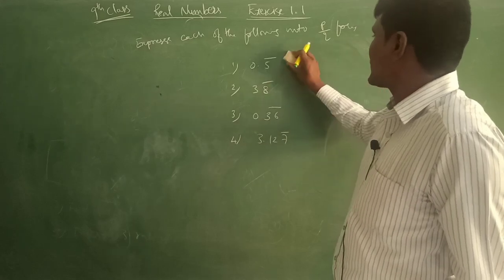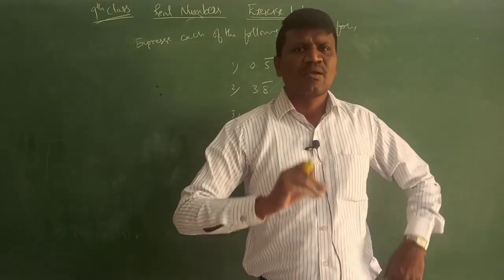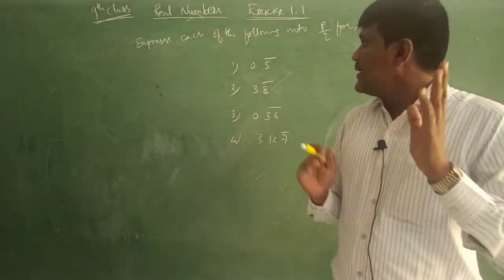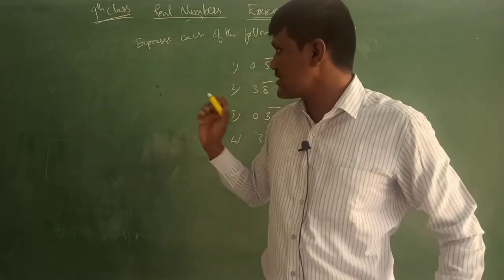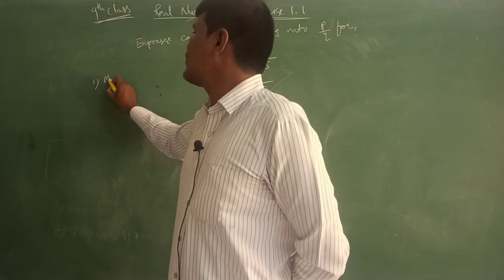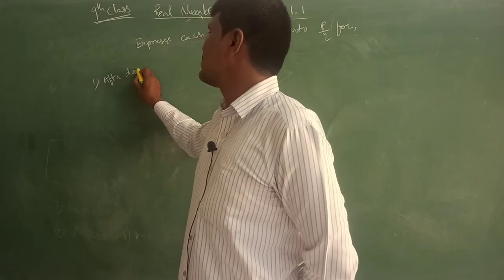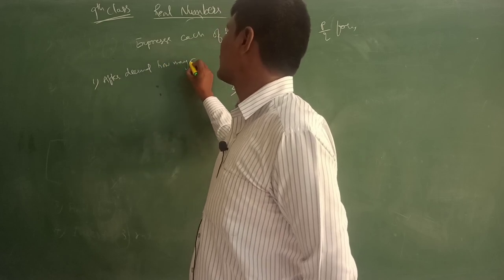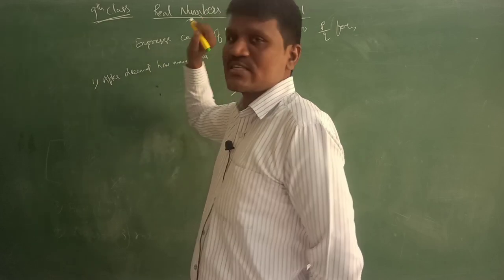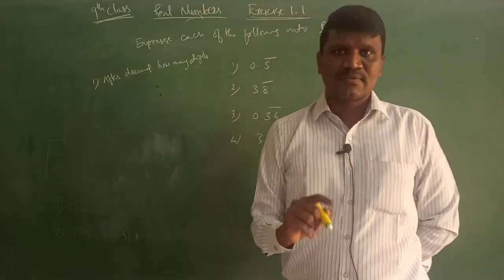So first, I'll observe. Main thing: for any decimal number, first point is after decimal, how many digits? So that is the first first point. After decimal, how many digits? Right?